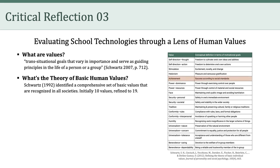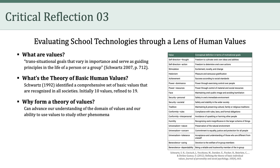You can see a list of those 19 values here on the right. One value, for example, is achievement or success according to social standards. Another value is benevolence — the caring or devotion to the welfare of in-group members. Every individual and or group pursues these values to varying degrees. Interestingly, Schwartz argued that having a theory of values can advance our understanding of the domain of values itself and our ability to use values to study other phenomena.